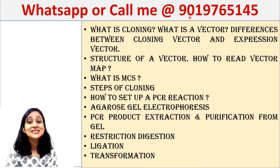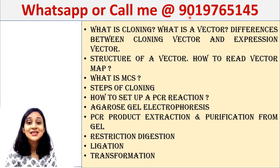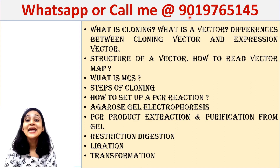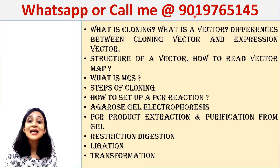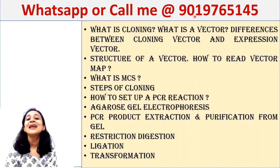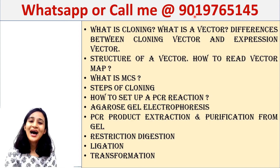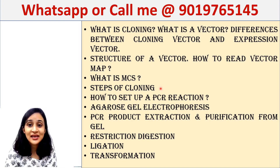A vector contains many elements like origin of replication, promoter, transcription and translation start site, termination site, etc. The orientation of the vector and orientation of the ORF — open reading frame — is also very important to understand. You also have to understand MCS, or multiple cloning site, which is the site where multiple restriction enzyme sites are placed, and where you need to insert your gene of interest.